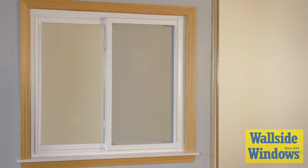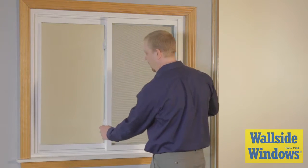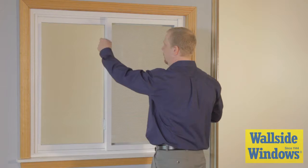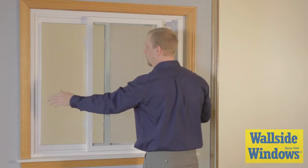A standard half screen can be removed from the interior or exterior of the window. Unlock the window and slide the front sash a few inches from the closed position.